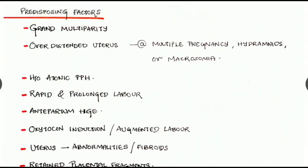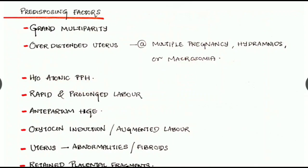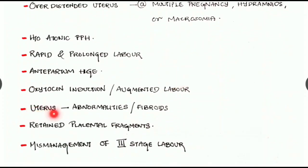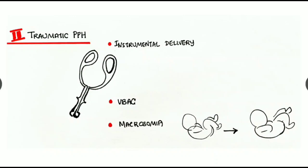Predisposing factors for atonic hemorrhage include grand multiparity, overdistended uterus in case of multiple pregnancy, hydramnios, or macrosomia; history of atonic postpartum hemorrhage; rapid and prolonged labor; antepartum hemorrhage; oxytocin induction or augmented labor; uterine abnormalities or fibroids; retained placental fragments; or mismanagement of third stage labor.